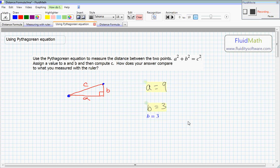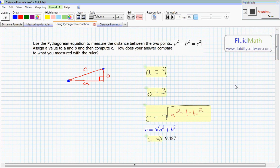And now we'll compute C. So if A squared plus B squared is C squared, we know that C is going to be equal to the square root of A squared plus B squared. Let's compute C. In FluidMath, we can write the double arrow sign to compute a value.